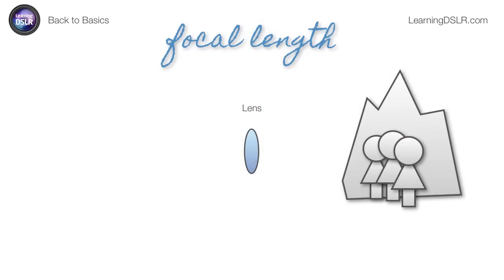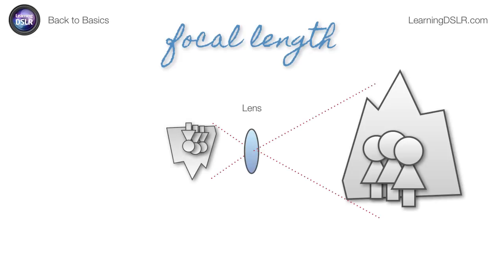Now let's do the opposite. I've got my subject in front of a beautiful landscape with some mountains, and I want to capture both the person and the landscape. I need a much wider perspective, and I need to fit all of that on the camera sensor. The camera sensor is right next to the lens, so I don't have very much room to travel to fit all that in. That's an example of a very short focal length — in this case, 18 millimeters.